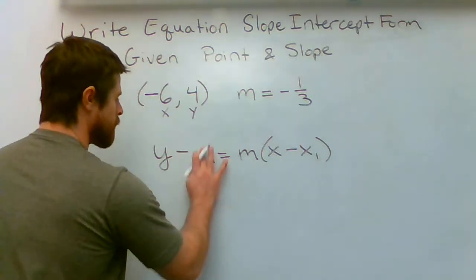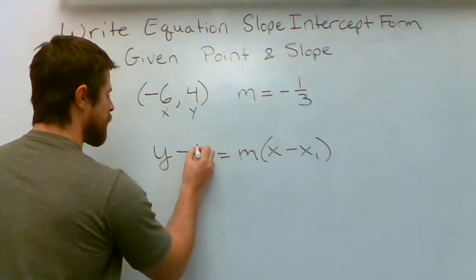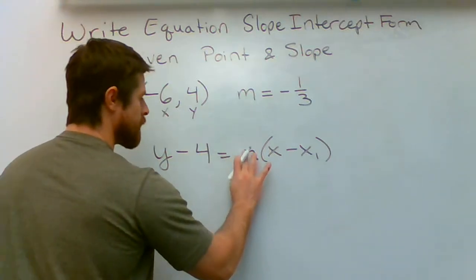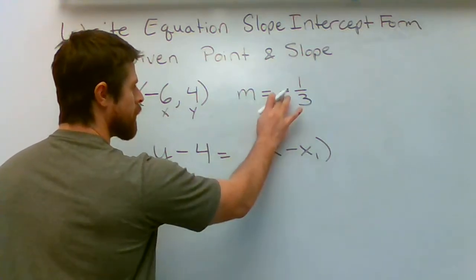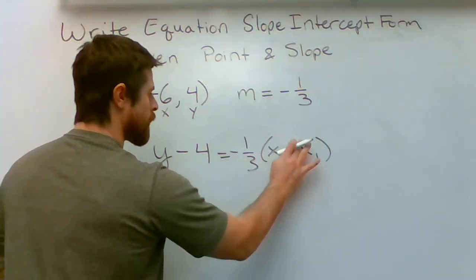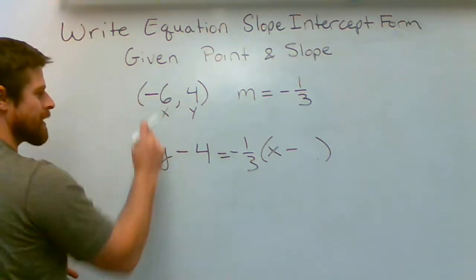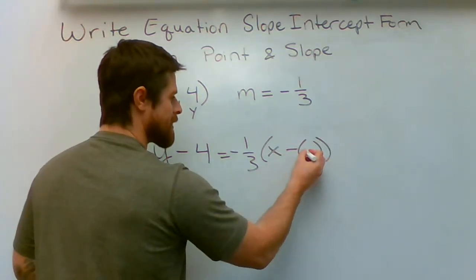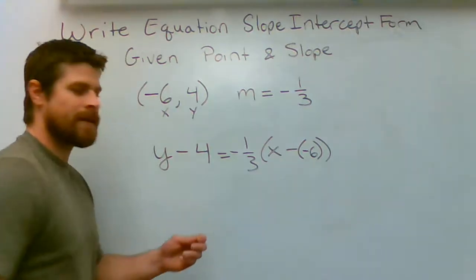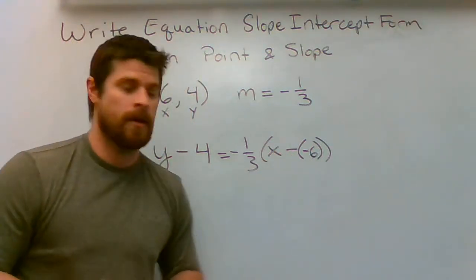We're going to erase the Y1 and put our Y value of 4. We're going to erase the M and put in our slope, negative one-third. And we're going to erase the X1 and because it's a negative value, I'm going to put parentheses there and say negative six. Because now I'm dealing with a double negative, that's going to turn into an addition symbol.